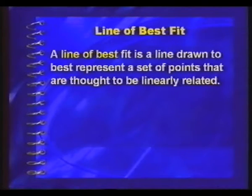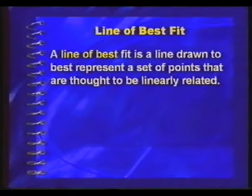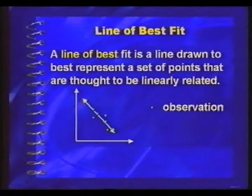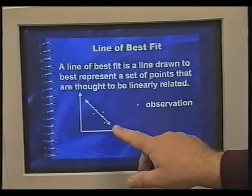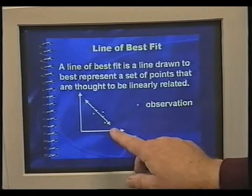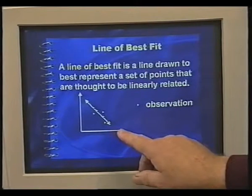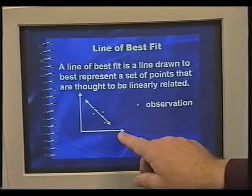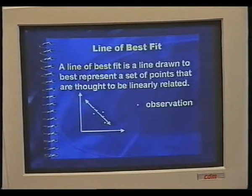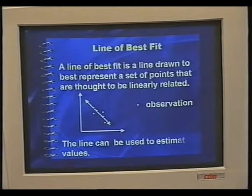Now let's have a look at what is actually meant by a line of best fit. It is the line that best represents the set of points. Here we've got a set of points — these are observations made on two variables — and I've drawn a line through these points that best represents them. Once I've done that, I can actually make some predictions. For instance, I might have a value on the x-axis and I want to know what value corresponds to that on the y-axis. I can use that line of best fit, sometimes called the prediction line, to estimate values.